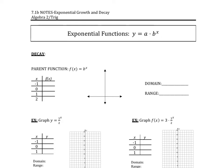Before we get started, let's review our basic exponential function. We know that an exponential function is one where the exponent is a variable. We know that our a value represents the initial value — this is our starting point. And then our b value is what we call our growth or our decay factor. Typically we just call it a growth factor, even if it represents decay.